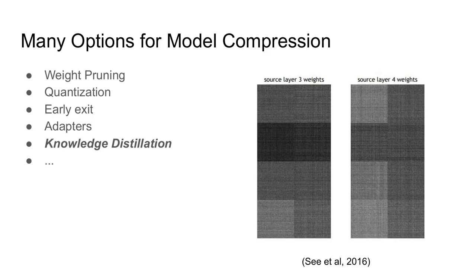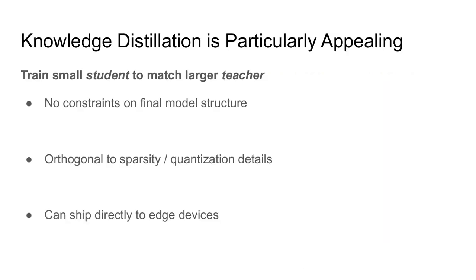In this work, we're going to be interested in serving the Whisper model efficiently. There are many different ways to compress models, such as weight pruning, quantization, forms of early exit, or efficient fine-tuning. Today, though, we're going to focus on compressing the model using knowledge distillation. Among these different approaches, knowledge distillation has some particularly appealing properties.